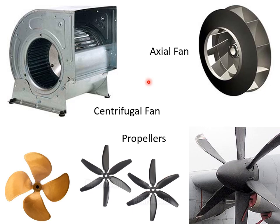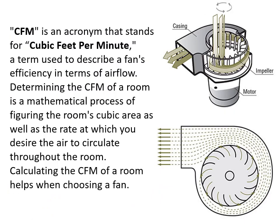There are three types of fans generally used in HVAC systems. The centrifugal fan delivers cooled air to rooms, such as in window ACs. The axial fan is generally used as an exhaust or booster fan in HVAC ducts and is also used to dissipate extra heat from condenser coils to the environment. CFM stands for cubic feet per minute, a term used to describe a fan's air flow efficiency. Determining the CFM of a room involves calculating the room's cubic area and the desired air circulation rate, which depends on the ventilation rate in air changes per hour.